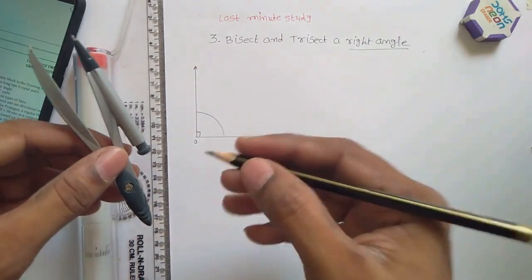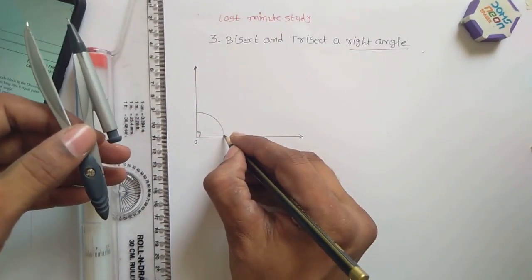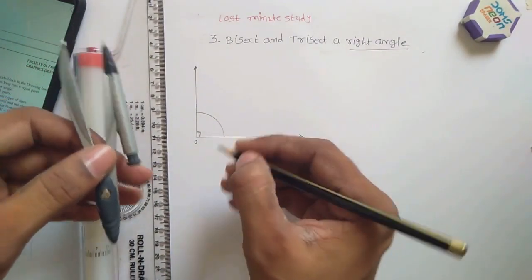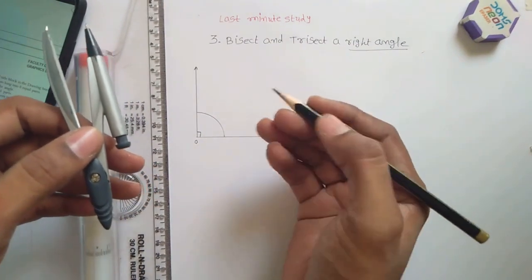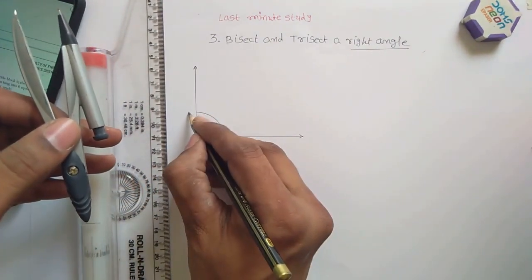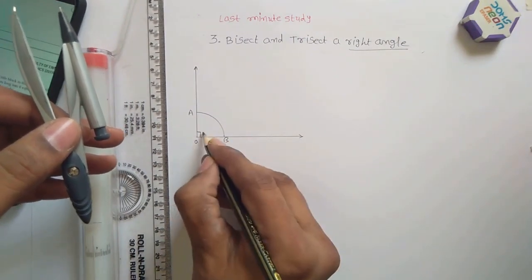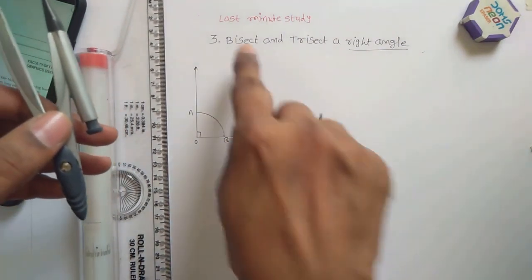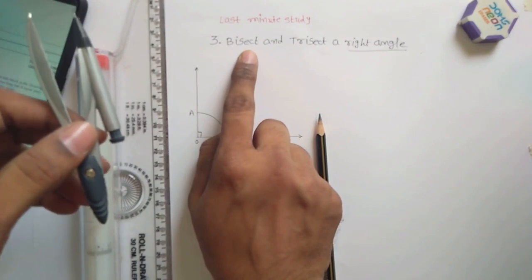In engineering graphics, everything is based on representation. How good you represent, you get good marks. So this is A and B. So this is 90 degrees. So now we have to bisect it. Bisect means two equal parts.